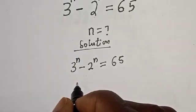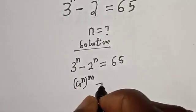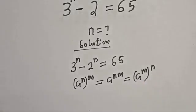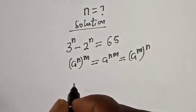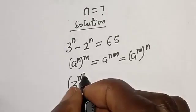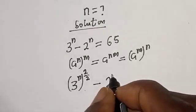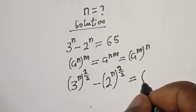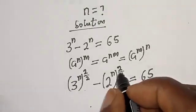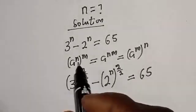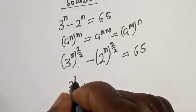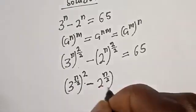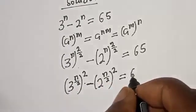Take note of this exponential rule: a raised to power n, to the power of m, is equal to a raised to power n×m, which is equal to a raised to power m to the power of n. Now for this equation, we use a trick: 3 raised to power n/2, all squared, minus 2 raised to power n/2, all squared, is equal to 65. This does not change the exponent because 2 divided by 2 gives you 1.